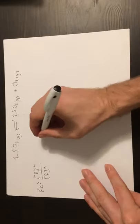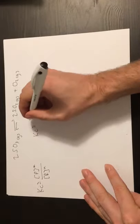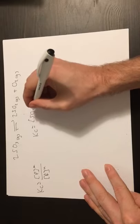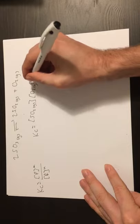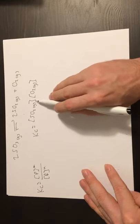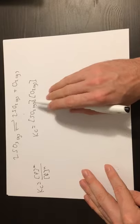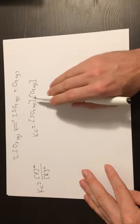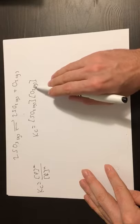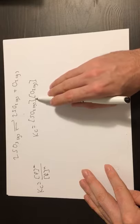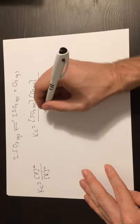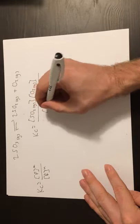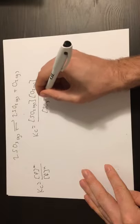So let's apply that to this question. Kc will equal my products, which is SO2 gas and O2 gas. And these square brackets represent the concentration of. So what I've written here is the concentration of SO2 multiplied by the concentration of O2. So there's no plus sign there. Each of these concentrations are multiplied together. And we're going to divide that by SO3 gas.